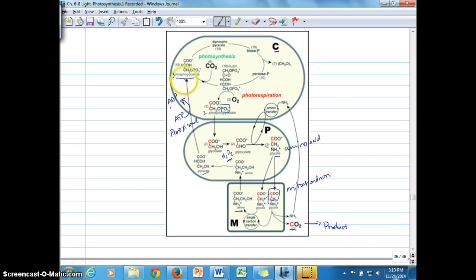So that's how 3-PGA can be reformed, but that's not a result of converting RUBP or fixing RUBP with CO2, which then gets converted into 3-PGA. So this cycle here that we've just followed from the chloroplast through the peroxisome